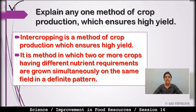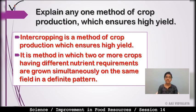Your next question is: Explain any one method of crop production which ensures high yield. The best method is intercropping. Intercropping is a method of crop production which ensures high yield. It is a method in which two or more crops having different nutrient requirements are grown simultaneously on the same field in a definite pattern.